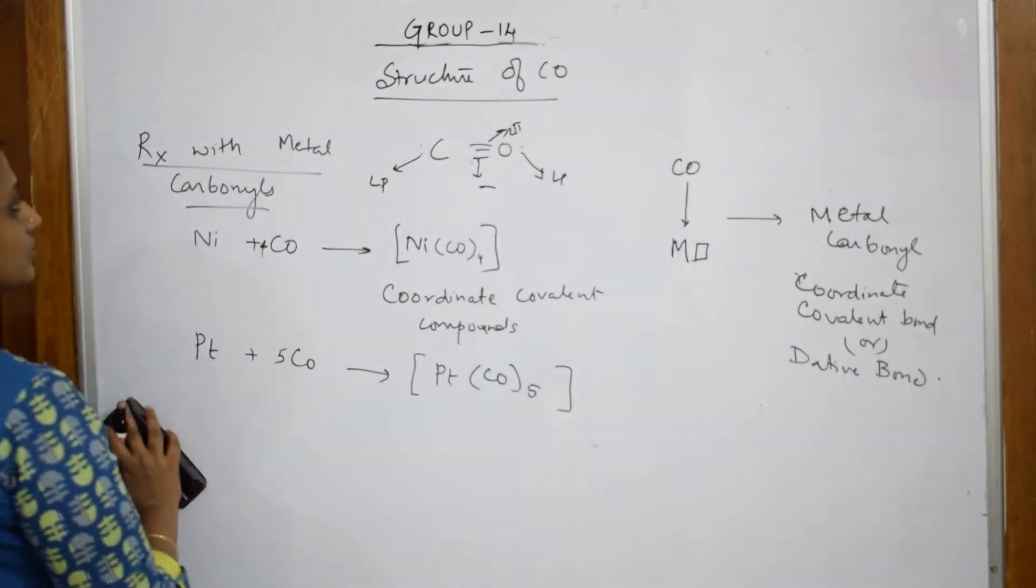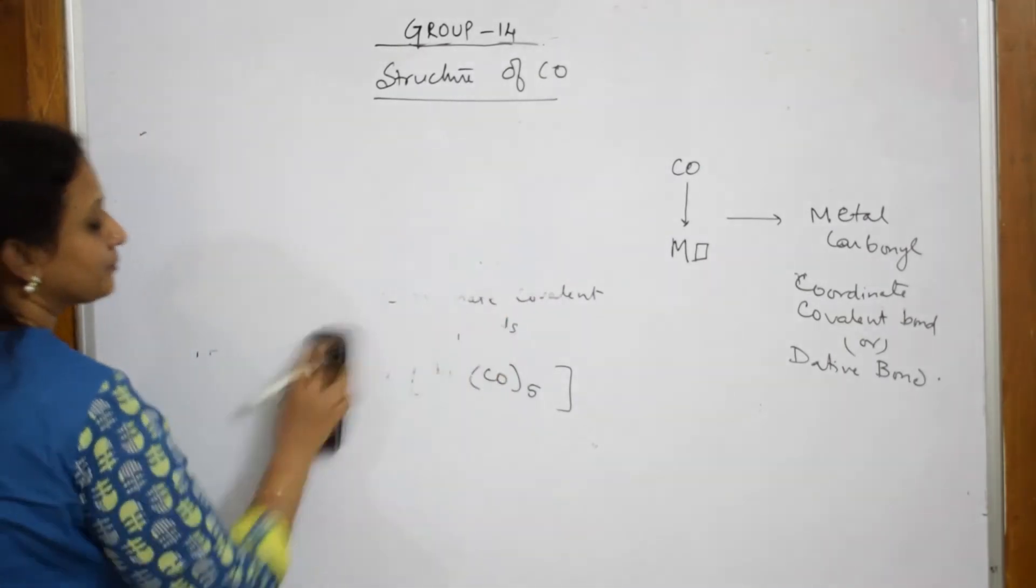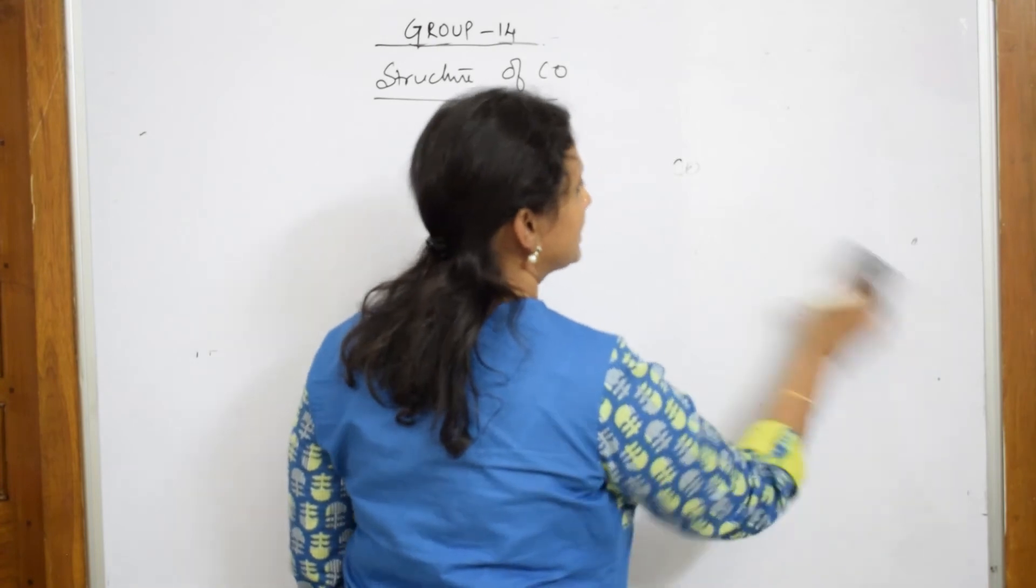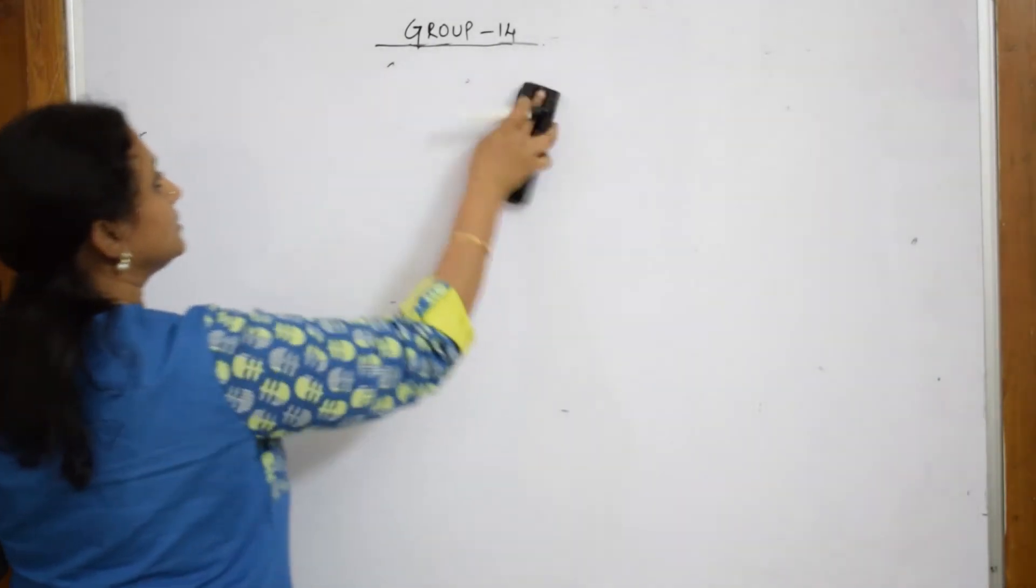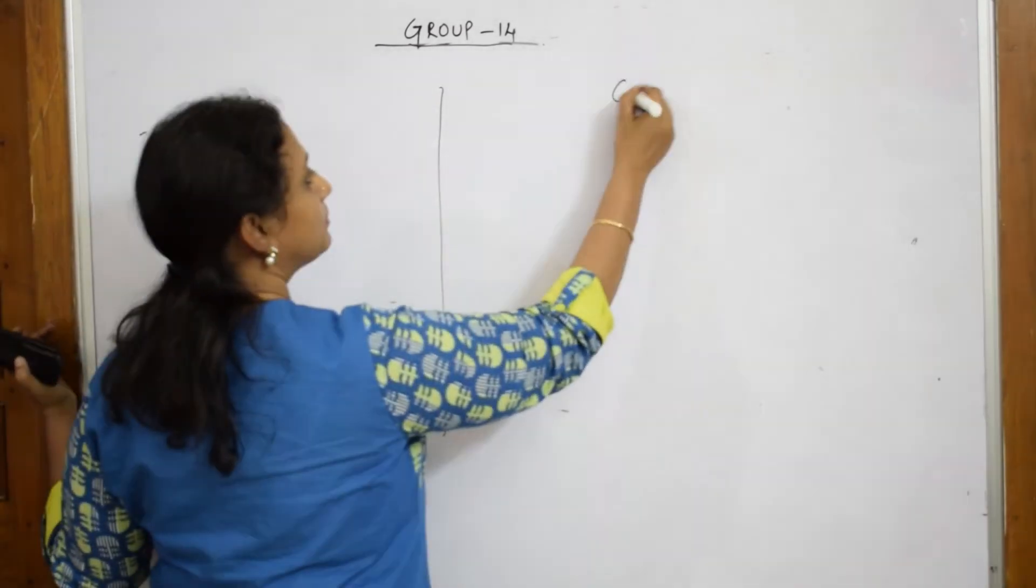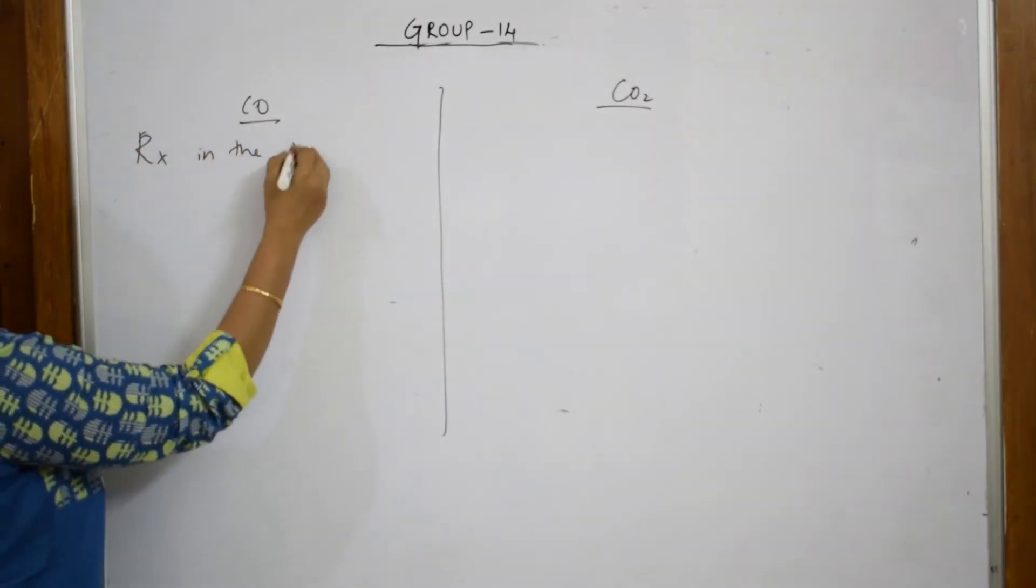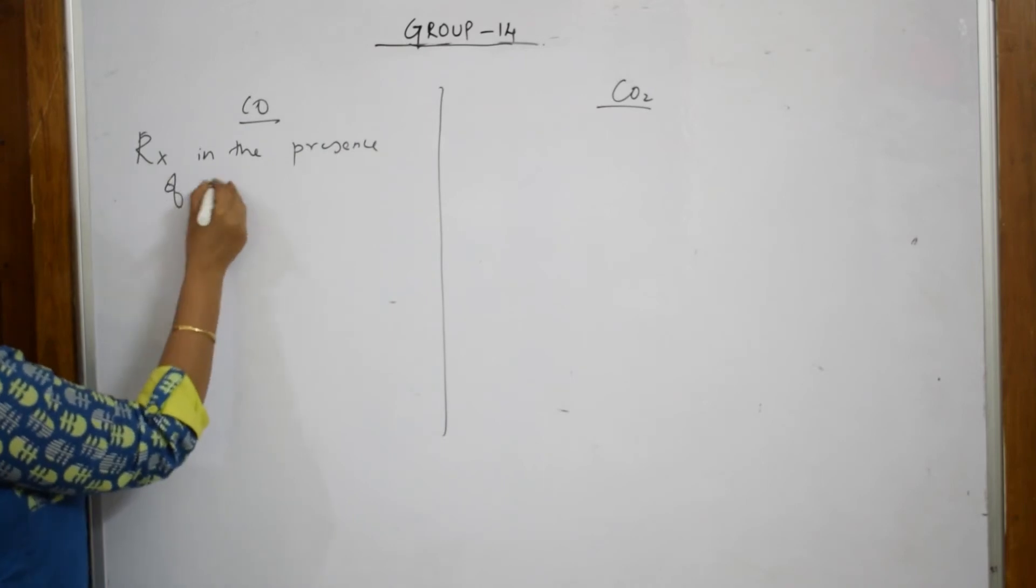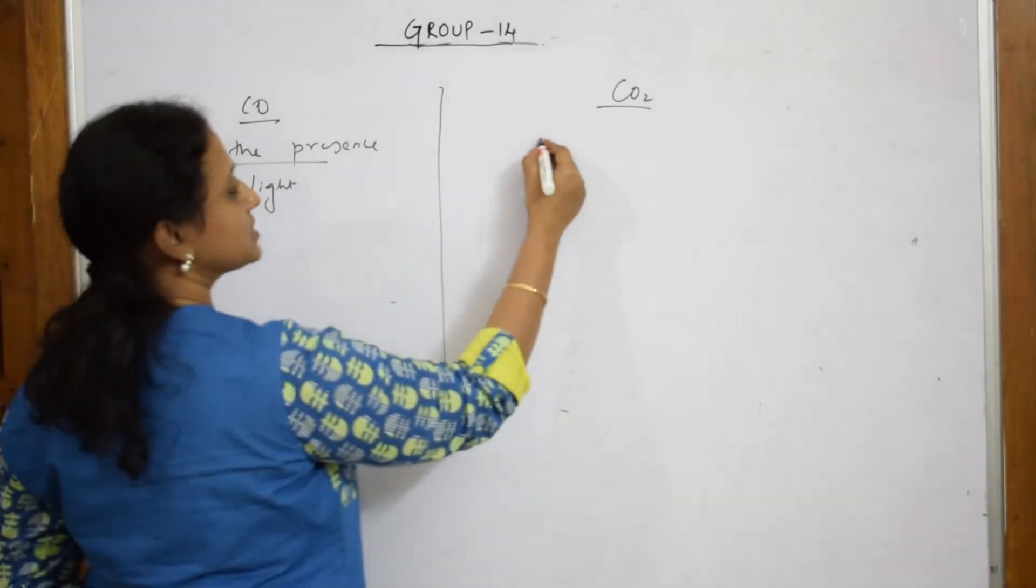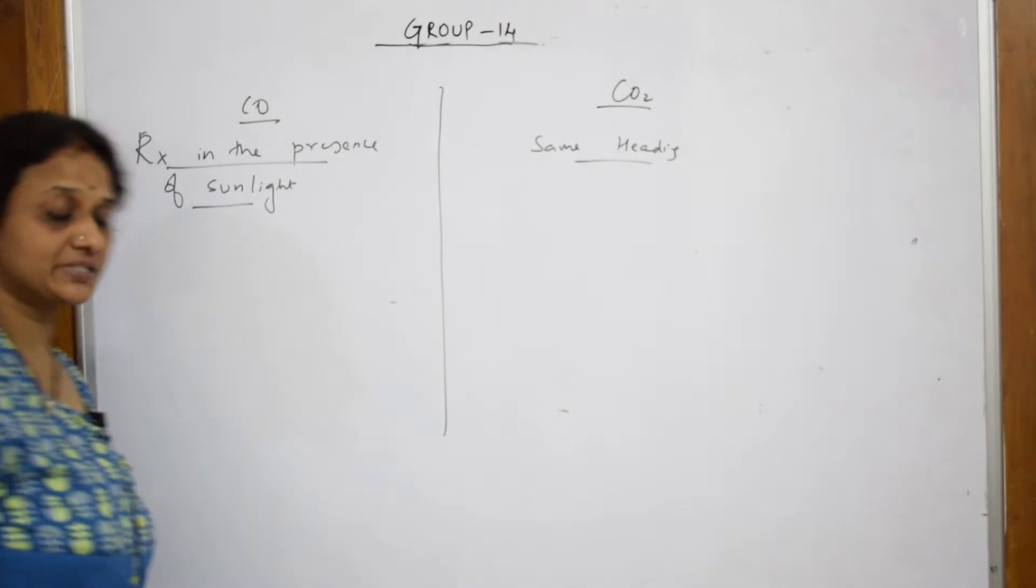Now one more important reaction - reaction in the presence of sunlight. With this we have completed all the reactions. Very important reactions are dealt with. Let us divide this page. You have carbon monoxide and carbon dioxide. Reaction in the presence of sunlight.